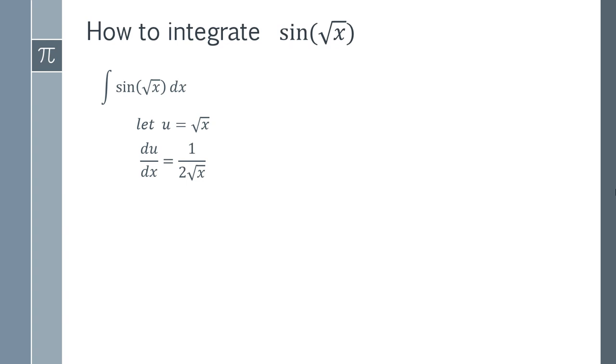What you should also spot is that root x is what we've already said u equals. So we can replace root x with u. So in fact our derivative is 1 over 2u. We want to find dx so that we can replace it. So we rearrange this and we can get that dx equals 2u du.